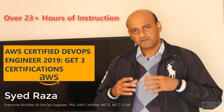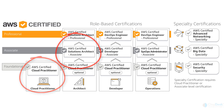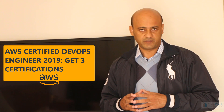Before I dive into the course agenda, this course is fairly gigantic in nature. We're going to provide you three different certification levels with Amazon Web Services: starting with the AWS Certified Cloud Practitioner, then AWS Certified Solutions Architect, and eventually leading to the AWS DevOps Certified Engineer. The ultimate goal is to walk you through the entire process, starting from the very scratch of what cloud computing is, all the way down to the DevOps professional certification.